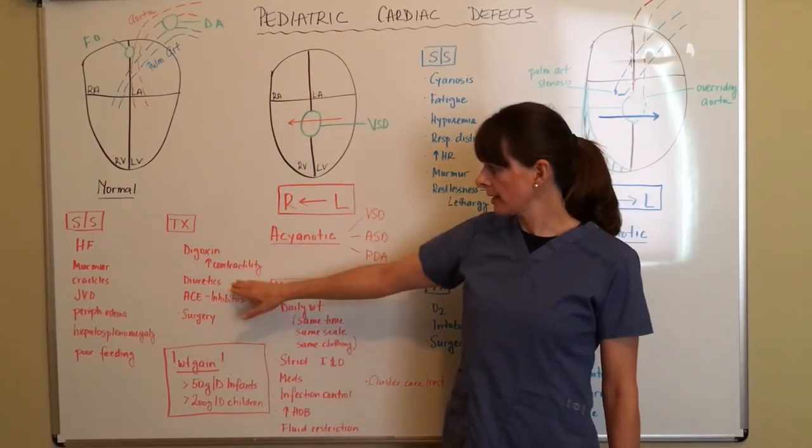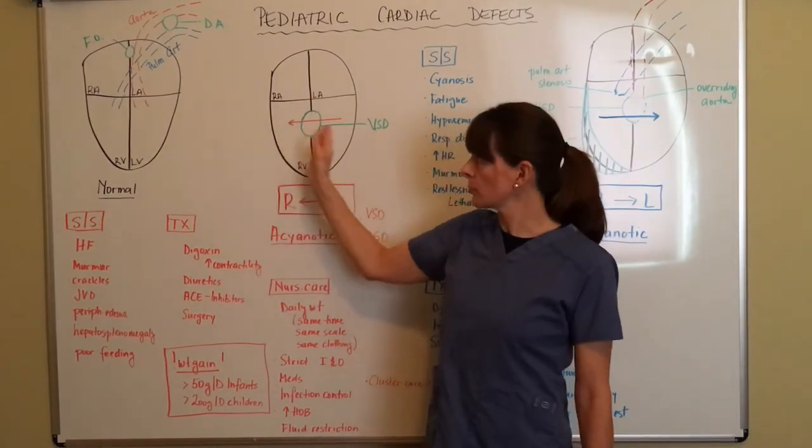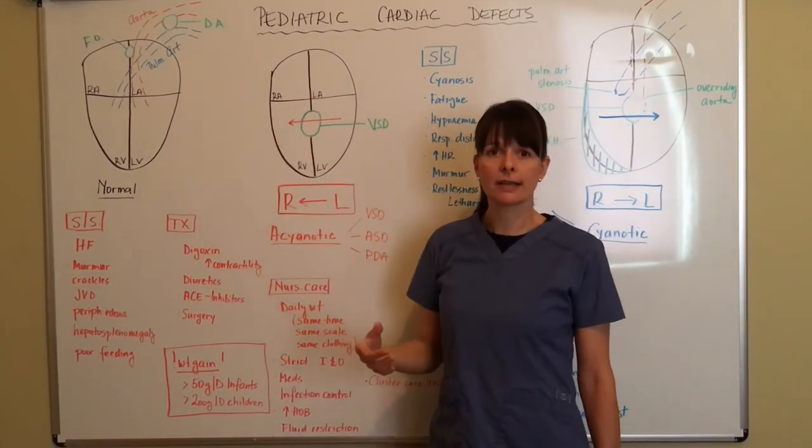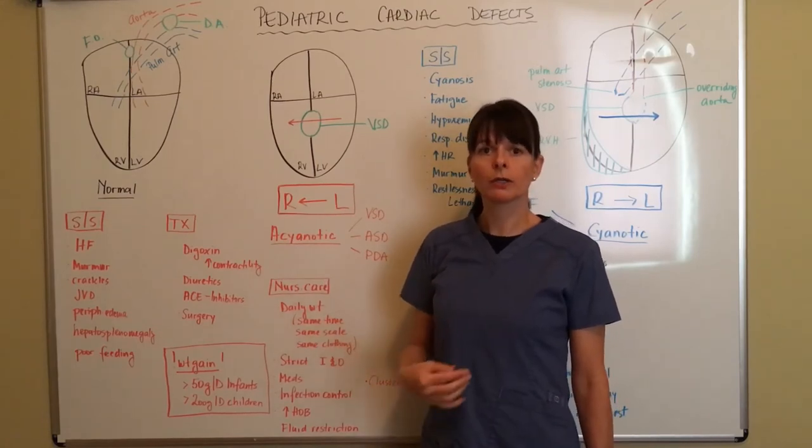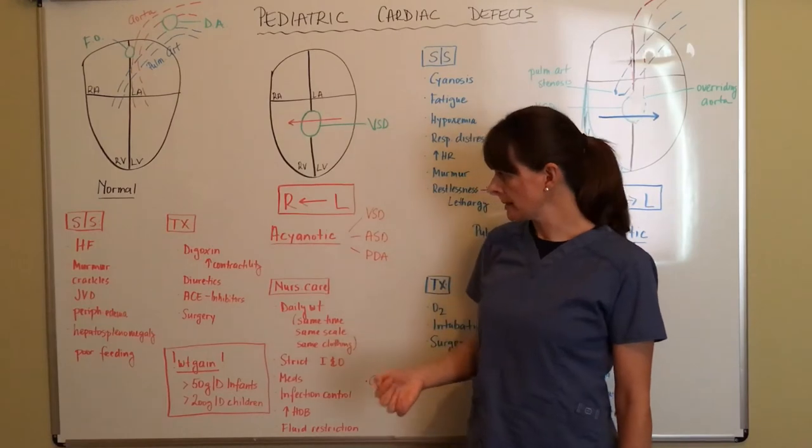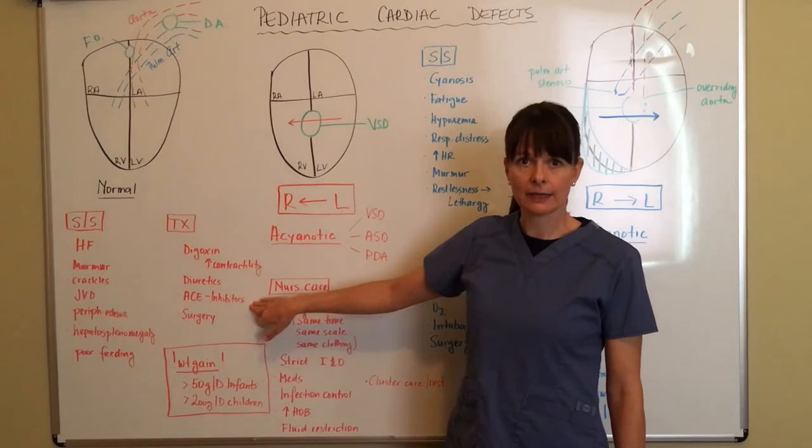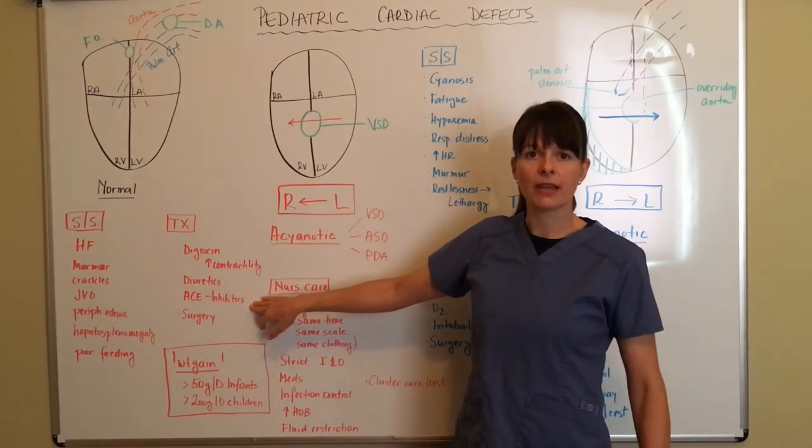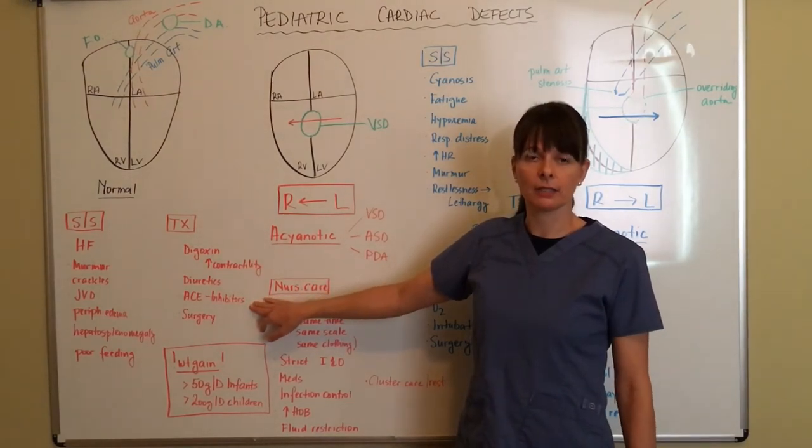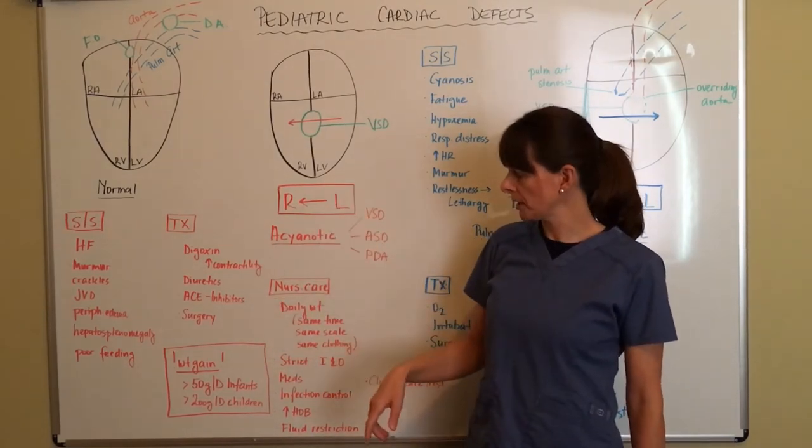Now there's diuretics, because we have all this fluid that's recirculating, and we have all these signs of fluid retention, so we're going to want to get rid of some of these fluids by using diuretics, as well as ACE inhibitors, which are a RAS antagonist. So they prevent the renin-angiotensin-aldosterone system from kicking in and upping the blood pressure, because this is not what we want in this scenario.